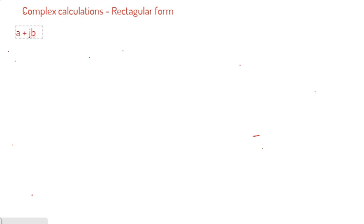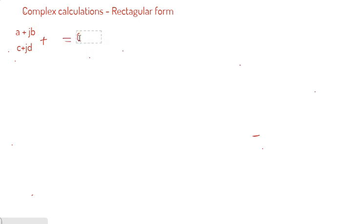Suppose you have two numbers in rectangular form: a plus j b, and another number c plus j d. If you need to add these two numbers, the resultant will be equal to (a plus c) plus j into (b plus d).